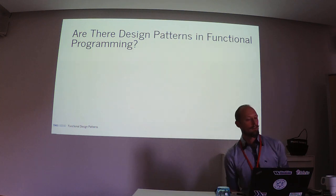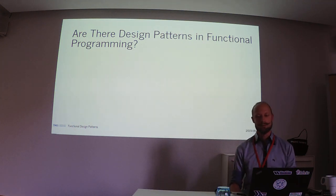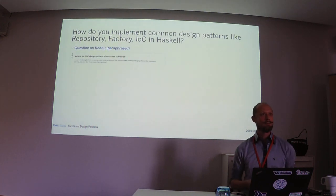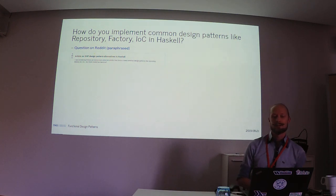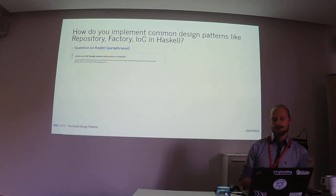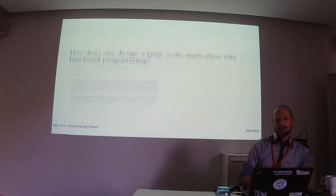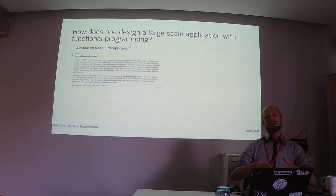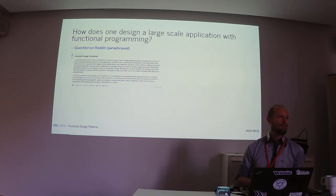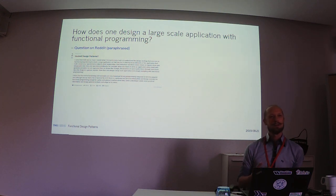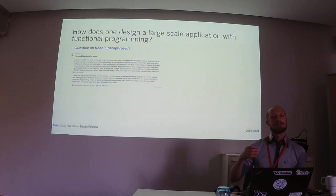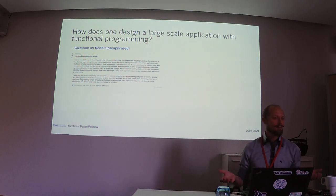On the question of whether there are design patterns in functional programming, questions pop up regularly on Reddit like: how do you implement common design patterns in Haskell — like repository, factory, and inversion of control? And more broadly: how does one design a large-scale application? Most patterns we know from object-oriented programming are for structuring an application in a repeatable, consistent way. But most of them don't translate to functional programming right away. Do we have factories in Haskell? Probably not.